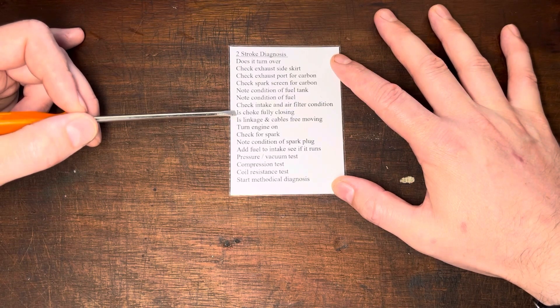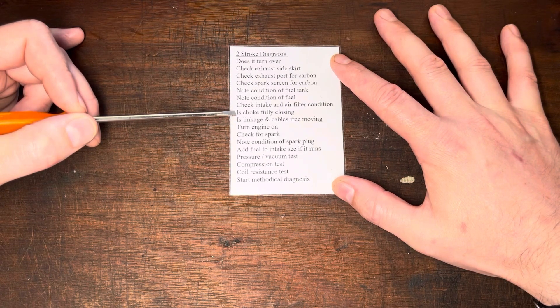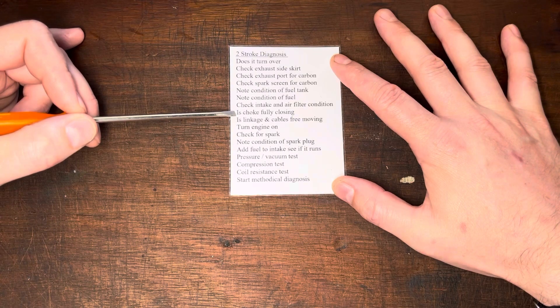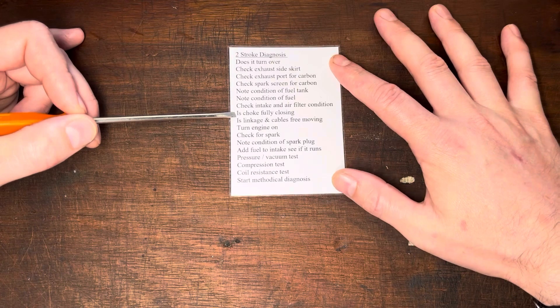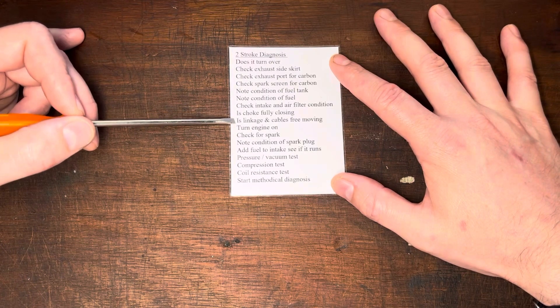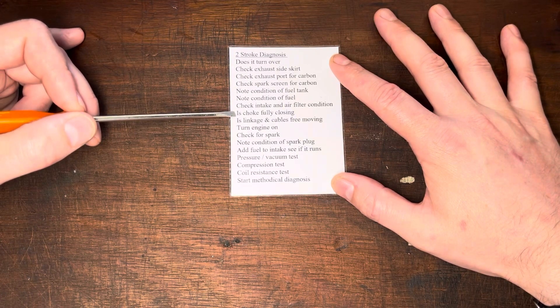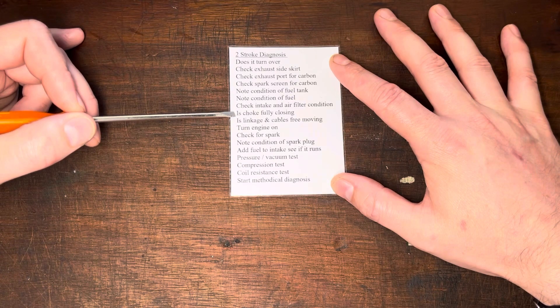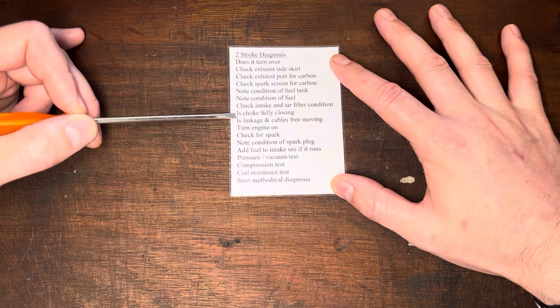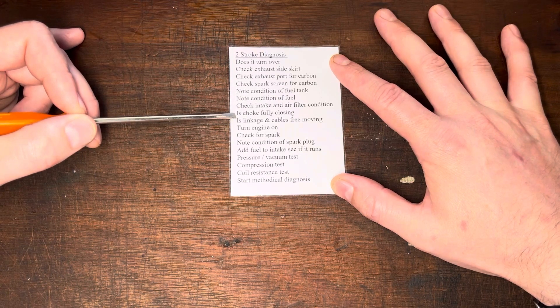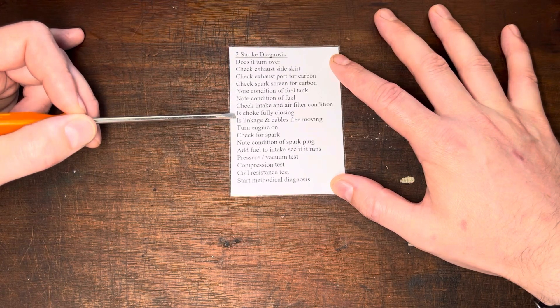Just check the choke is fully closing, that it's actuating, that it actually seals the intake correctly. Sometimes you can have running issues just through something as simple as the choke not closing. So have a quick look at that. Externally, it can be quite easy to pick up. However, if the flange of the choke is connected to where it's connected to the carb, if there's a bit of a gap in there, you may find that that could be an issue too.